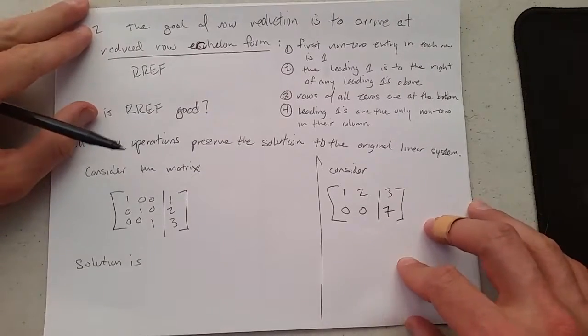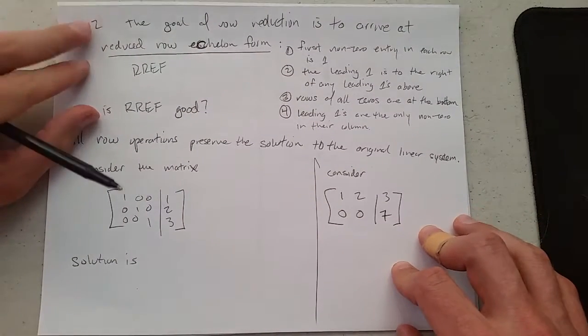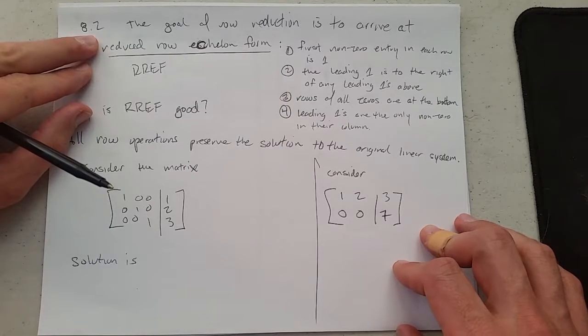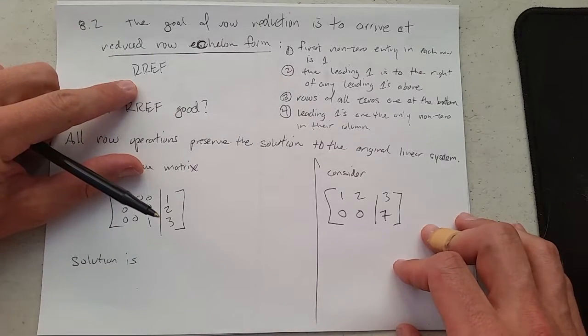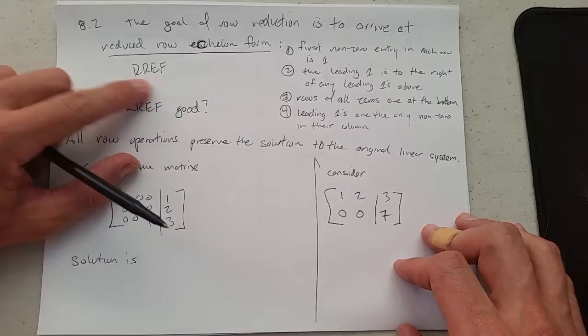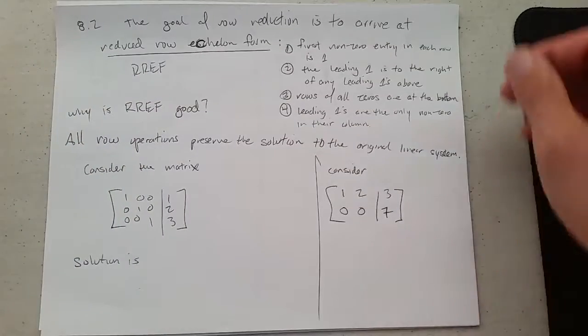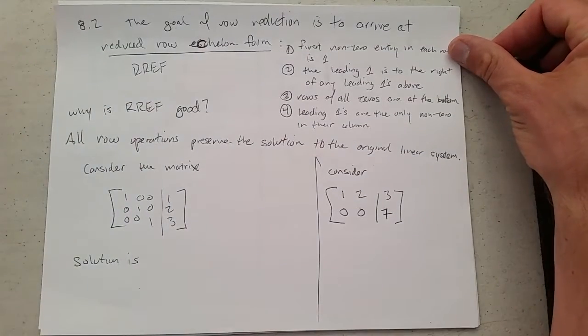So the entire goal of row reduction is to arrive at this row-reduced echelon form. I'm going to be lazy when I write and just write this as row-reduced echelon form, R-R-E-F. What is row-reduced echelon form?